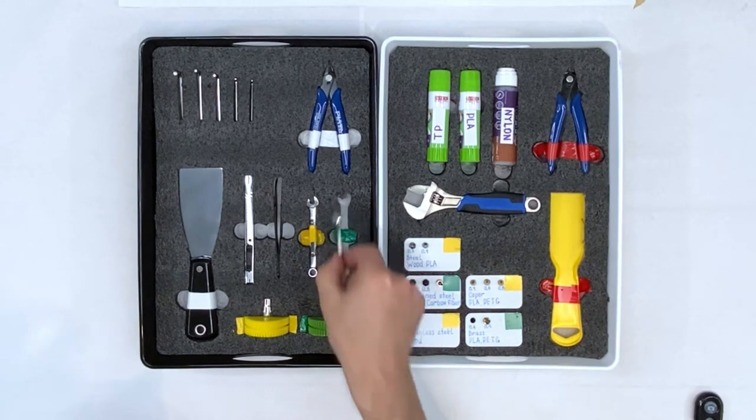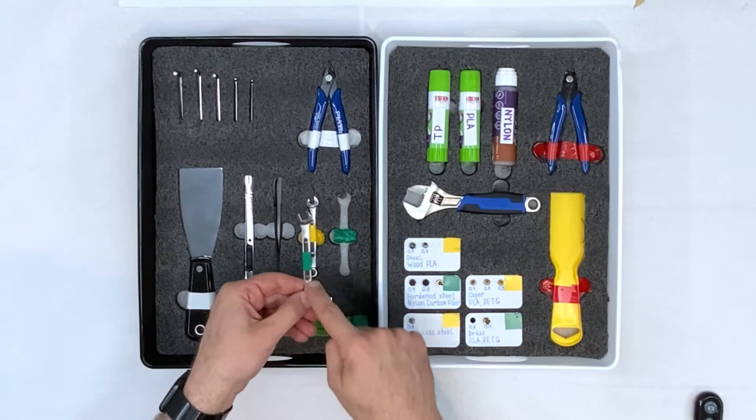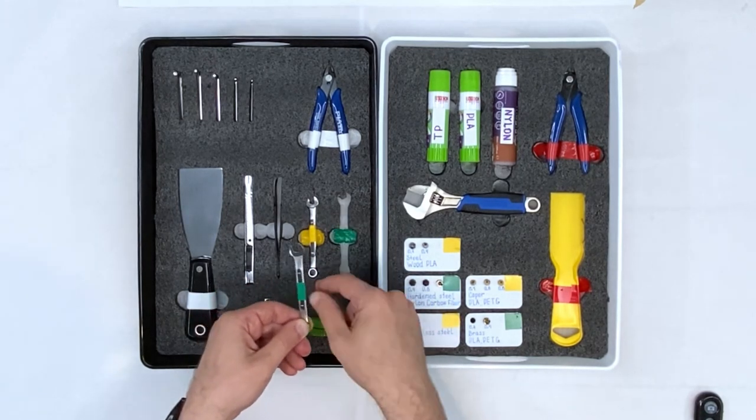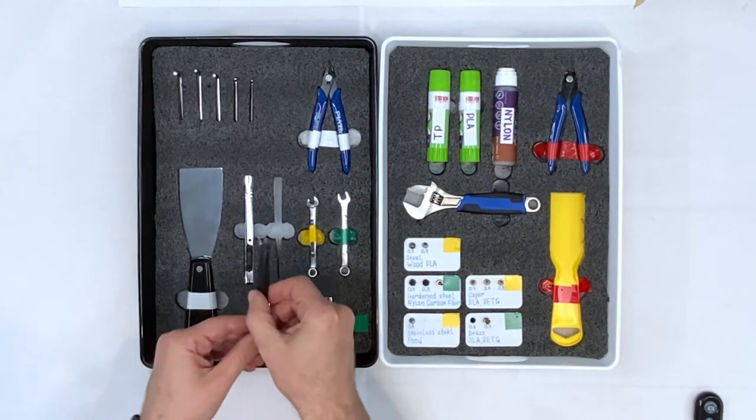I used Kaizen foam from FastCap. I carved the foam in the tool's precise shape, so that only that particular tool can fit there. The wrench, tweezers, pliers, putty knives, everything has its own home.